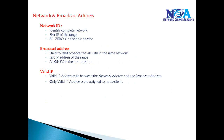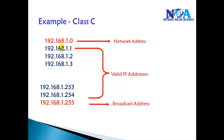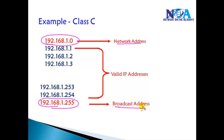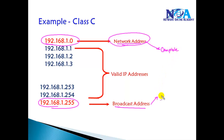Whatever the address range we get, we cannot use the first address and we cannot use the last address. The first address is referred to as the network ID or network address, and the last address is referred to as the broadcast address. They are reserved for specific purposes: the network ID identifies the complete network, and the broadcast ID is used to send broadcasts within the same network.